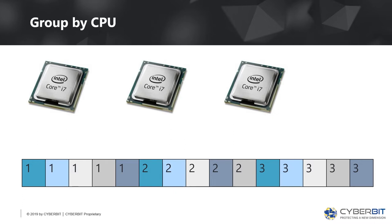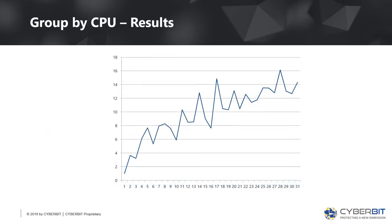Another way to tackle this is to group counters by CPU: all counters for the first core together, then the second, then the third. When each core updates its own counters, it doesn't invalidate anyone else's. The measured results are much better — up to 16 times slower rather than 50 — though still not ideal.